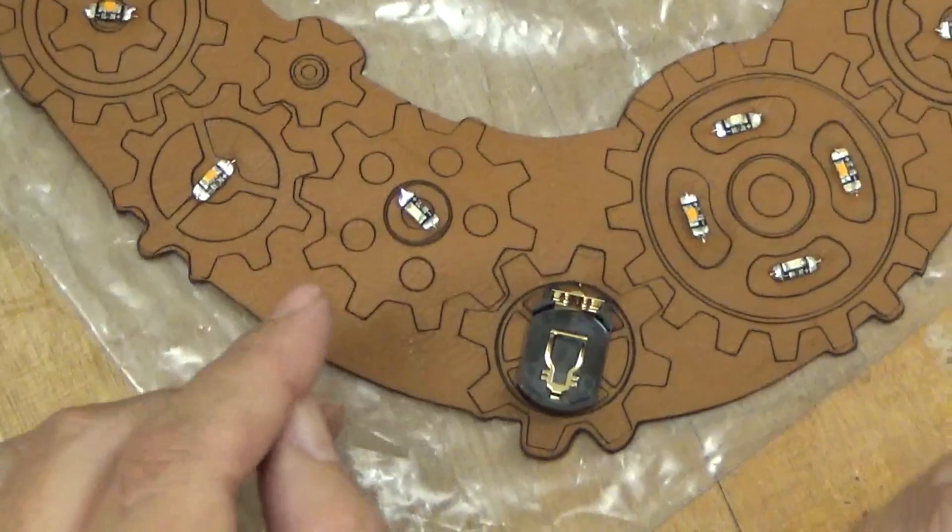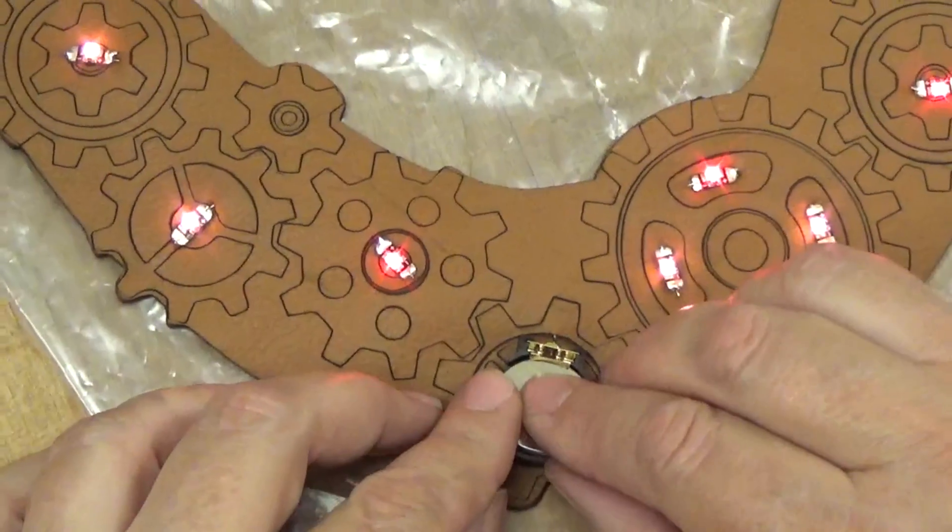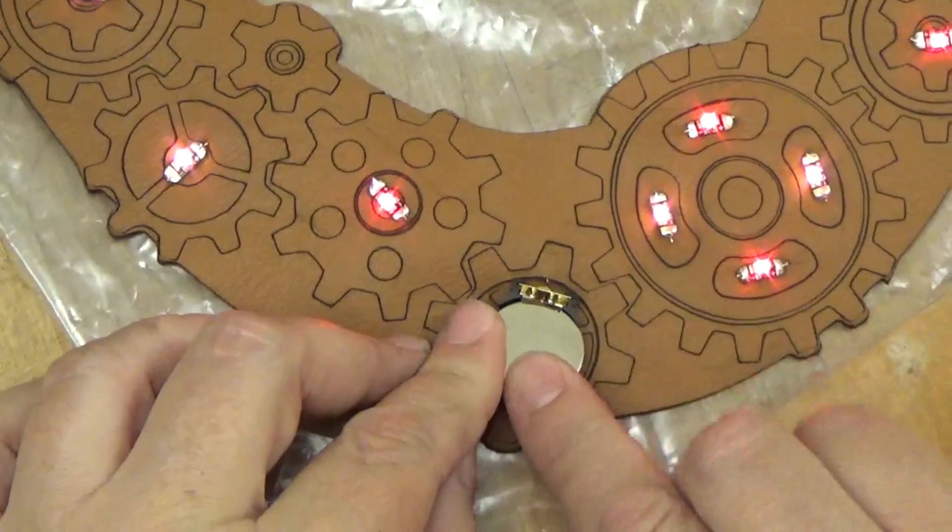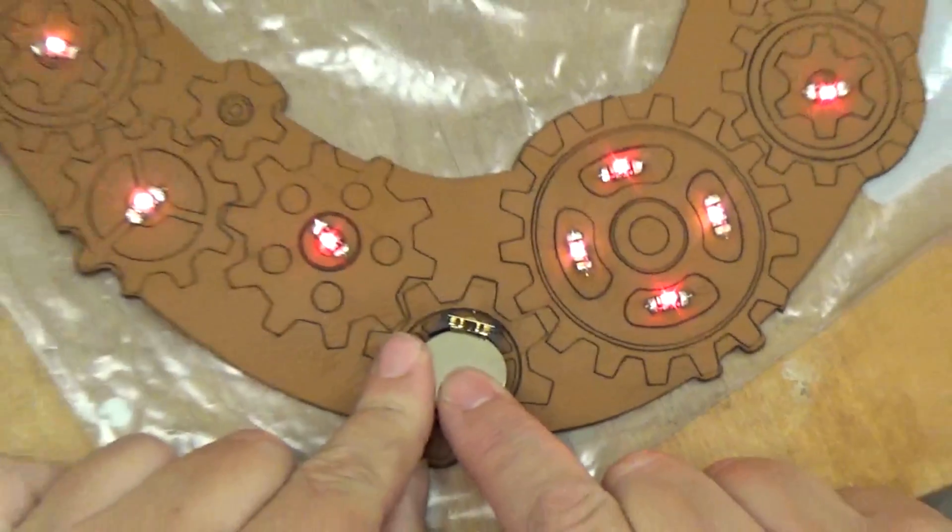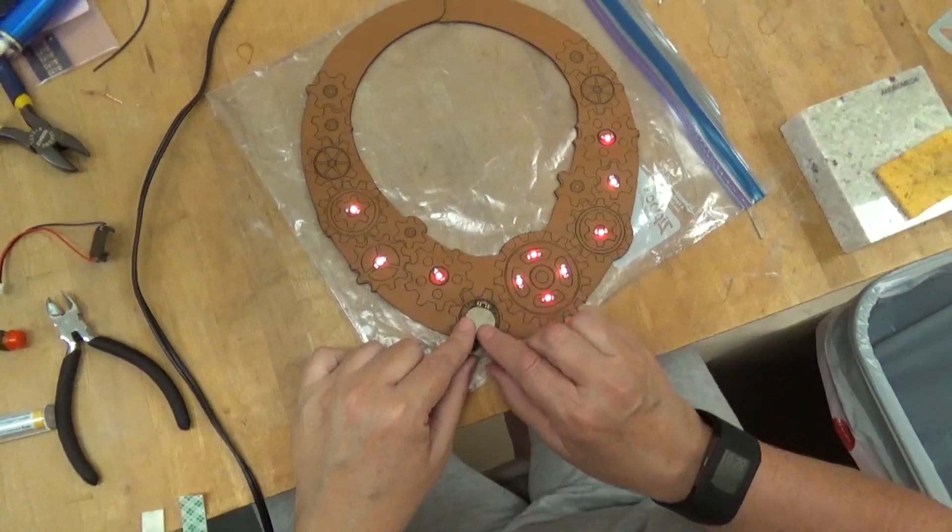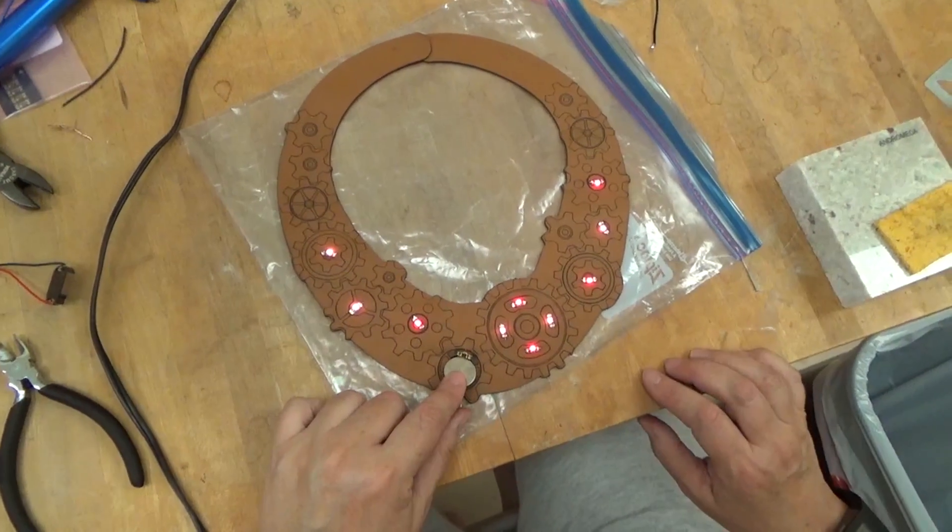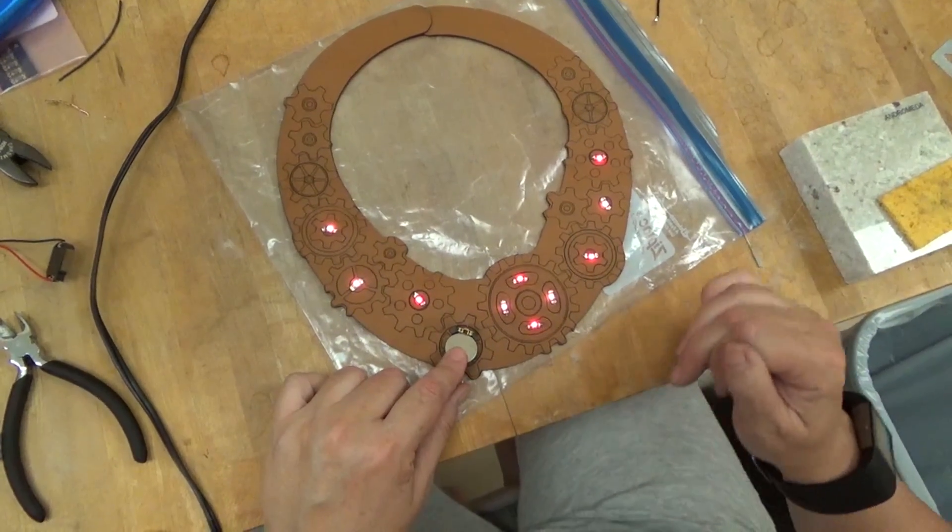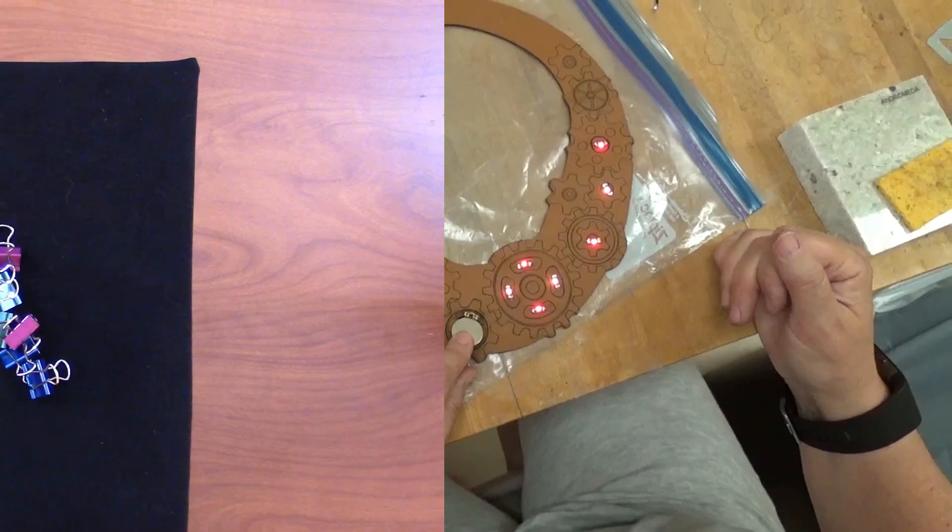One piece of advice I always give on lighting is to test at every step of the assembly process. So here I'm testing to make sure that all the lights are lighting properly. All that's left to do now is machine sewing the back on and some hand sewing of the connection at the back.